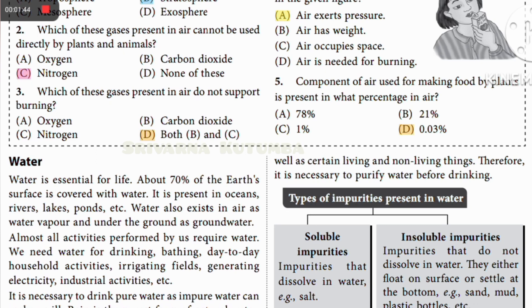It is necessary to drink pure water, as impure water will make us ill. Rain is the purest form of natural water, but rain can dissolve some impurities. Rain is most pure, but as it comes down to earth, the air has some impurities that get mixed with the rain, making it impure.